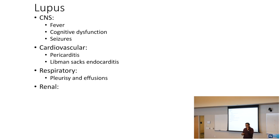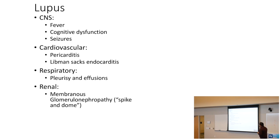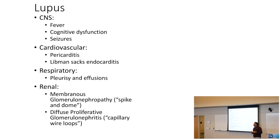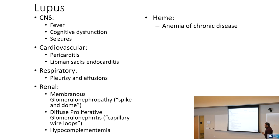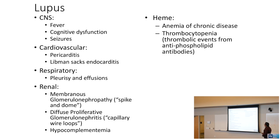Renal manifestations are high yield: renal failure is a common cause of death in lupus. Membranous glomerulonephritis is the nephrotic presentation, with a spike and dome appearance. The nephritic presentation is diffuse proliferative glomerulonephritis with capillary wire loops. Hematologically, lupus causes anemia of chronic disease with elevated ferritin. Thrombocytopenia is also seen; lupus anticoagulant and antiphospholipid antibodies can paradoxically cause thrombotic events.